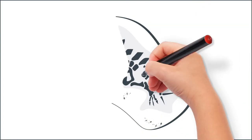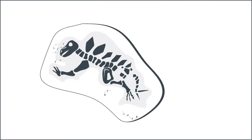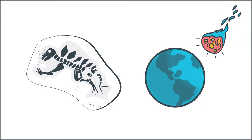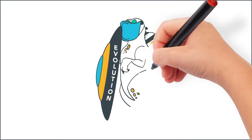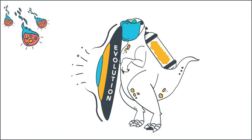Fossils, or really old rocks and bones, show that when the Earth got hit by a massive meteor, dinosaurs didn't all go extinct. Some of them survived through evolution.